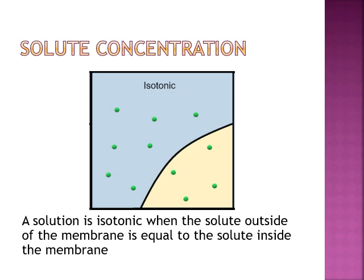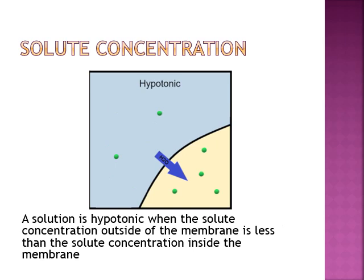We can describe solutions in different ways. Isotonic means two solutions have equal amounts of molarity — equal solutes per unit volume. 'Iso' means same, like isosceles triangles or isomers. Hypotonic means 'hypo' — small — so you have less solute in the surrounding solution than inside the cell. If the solution is hypotonic, it has a smaller amount of solute.